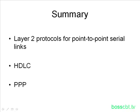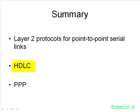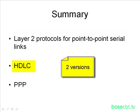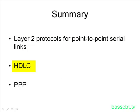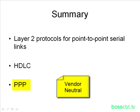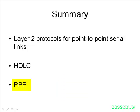To summarize: we covered layer 2 protocols for point-to-point serial links. HDLC comes in the original standard and the Cisco proprietary version; the Cisco proprietary can identify the layer 3 networking protocol in its data. PPP came after HDLC, is more robust with more features, and is vendor neutral — you can use it between devices from different vendors. Thanks for watching.